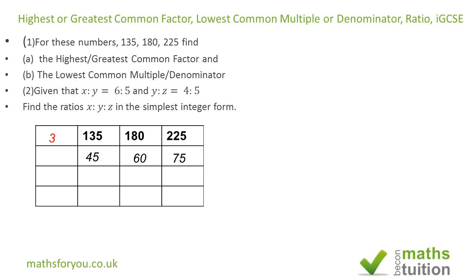Applying the same digit-sum process again to 45, 60, and 75, we find that the sum of the digits are all multiples of 3. Therefore 3 is again a common factor. Dividing all three by 3, we get 15, 20, and 25.